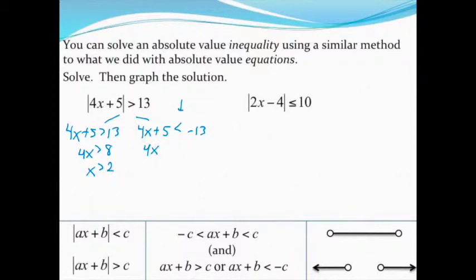The other side, I get 4x has to be less than negative 18. I'm dividing by 4, and even though there's a negative, I'm not dividing by a negative, so my inequality is not flipping directions. So I end up with x has to be less than negative 9 halves or negative 4.5 if you prefer.